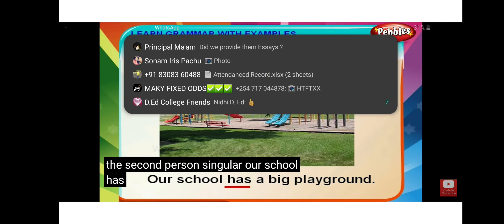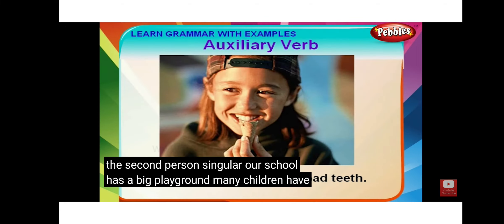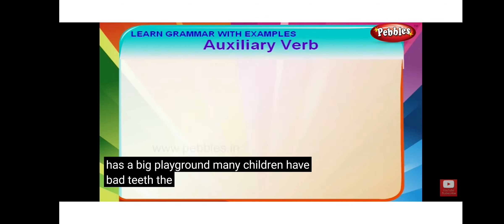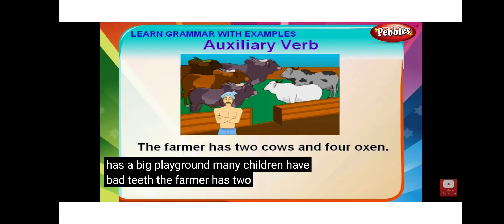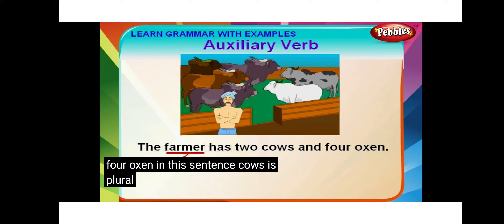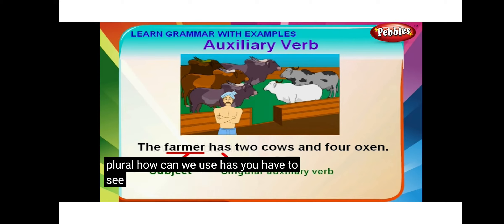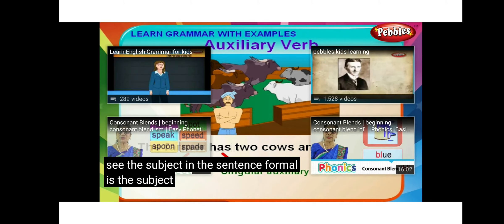Our school has a big playground. Many children have bad teeth. The farmer has two cows and four oxen. In this sentence, 'cows' is plural — so how can we use 'has'? You have to see the subject in the sentence. The farmer is the subject and it is singular.